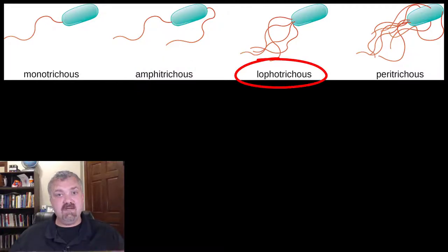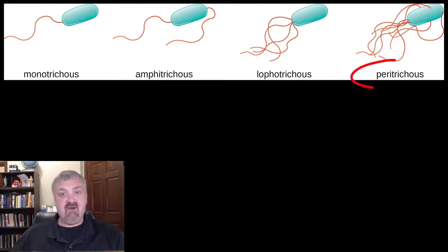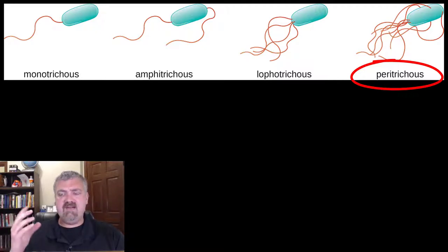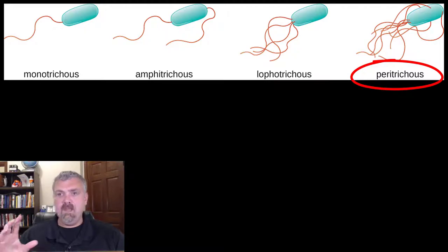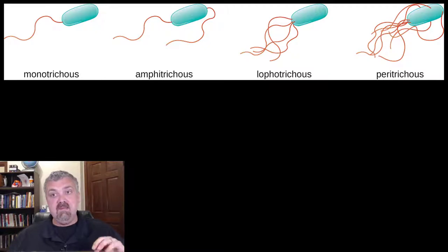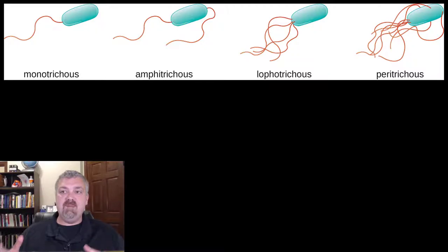Lophotrichous means a tuft of flagella on one end. And then lastly we have peritrichous, which means all over the place. This picture doesn't do it justice — this could have hundreds of flagella even on the surface. Remember how important flagella are for bacterial movement, because since they're so tiny, bacteria moving through water would be like you trying to swim through peanut butter.